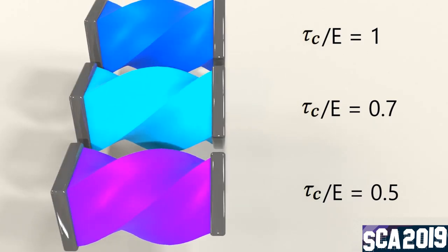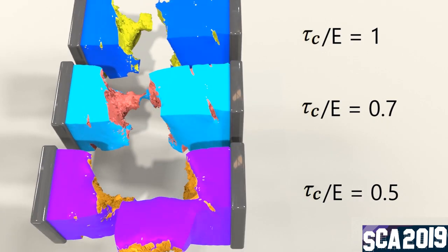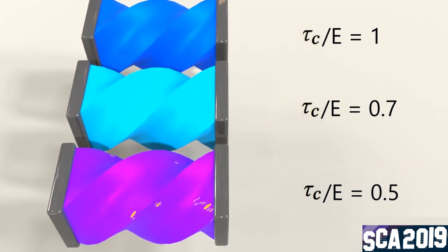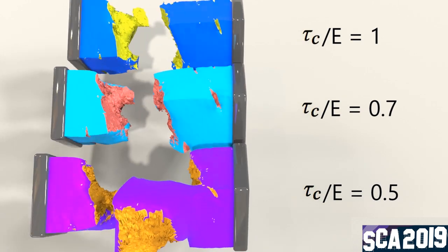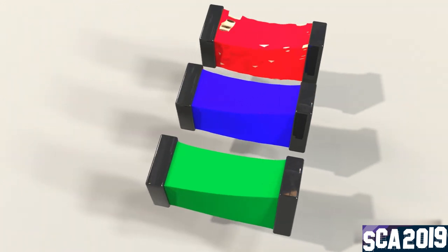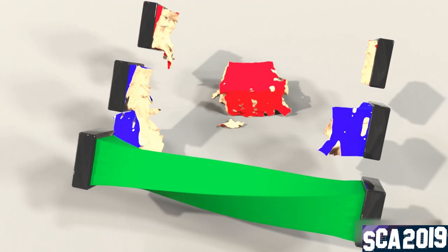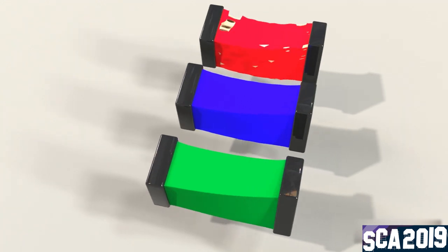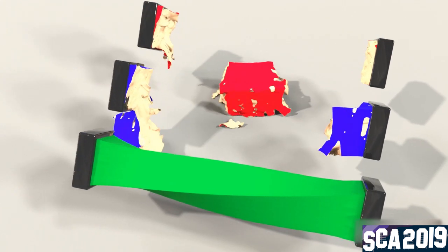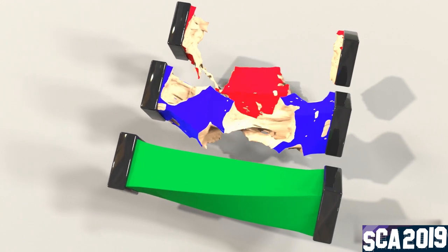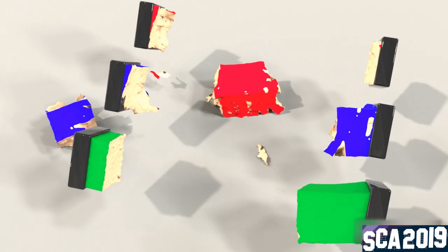We compare particle MPM with different von Mises yield surfaces. Observe that the bottom block shows more plastic features as its yield surface is 50% smaller. When undergoing excessive deformation, traditional particle-based MPM suffers from numerical fracture. We compare particle MPM with Lagrangian mesh MPM using a Rankine yield surface. Notice how Lagrangian MPM captures the extensive stretching before it fails.